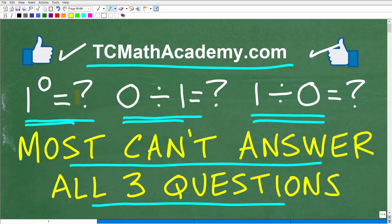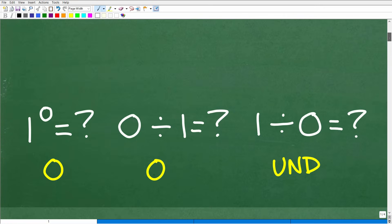Okay, so again, we don't want to use our calculator. One to the zero power, zero divided by one, and one divided by zero. What is the answer? Well, let's go ahead and take a look at the answers for all three of these questions. And here we go.